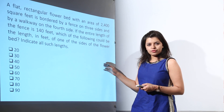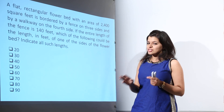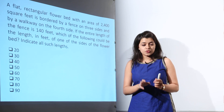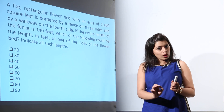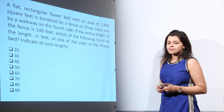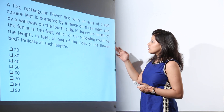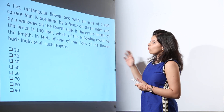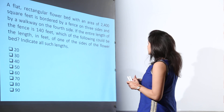In this particular question, we have a multiple choice question, which means more than one value can be correct and marks will be awarded only if you mark all the correct options. It says that a flat rectangular flower bed with an area of 2400 square feet is bordered by a fence.